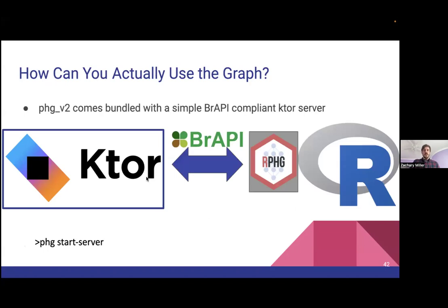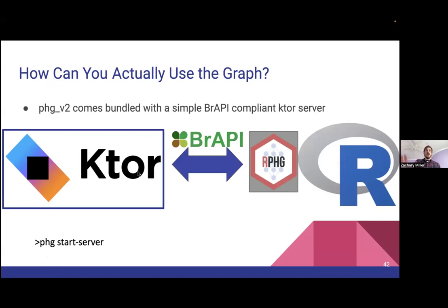How can you use it? PHG v2 comes bundled with a simple Ktor server. All you have to do is say "PHG start server" — there are a couple of hidden parameters you can tweak like changing the port — but basically you do this and it spins up a BRAPI-compliant web server that will utilize the variant set and all the call sets to allow you to access the genotype and haplotype information through BRAPI. We also have a companion R class called RPHG, developed by Brandon, that allows you to interact much more smoothly — it puts things directly into data frames that you can then pass to different R analysis toolkits such as rTASSEL or other generalized ones.